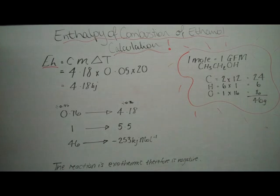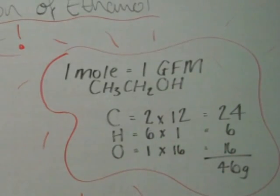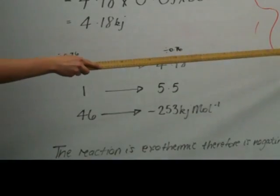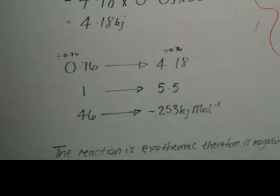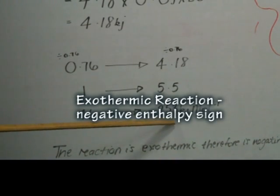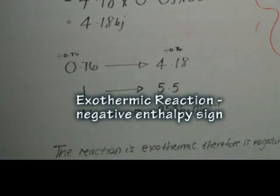We can now calculate the heat energy released on burning one mole of ethanol. The gram formula mass of ethanol is 46 grams. One gram gives us 5.5 kilojoules, so one mole gives us negative 253 kilojoules. The reaction is exothermic, thus it is negative.